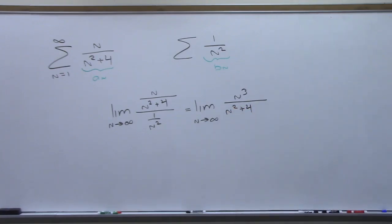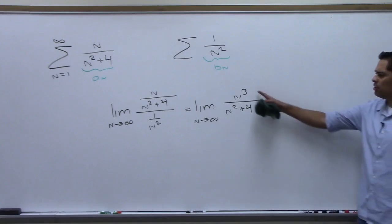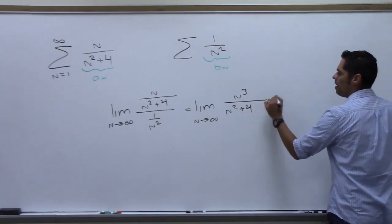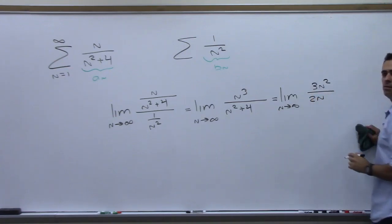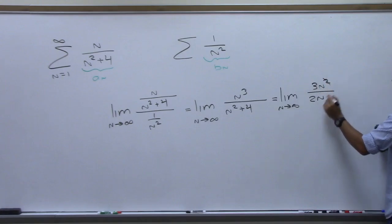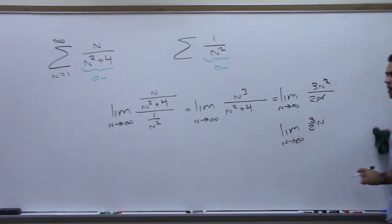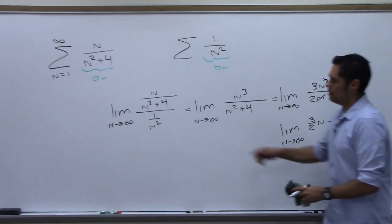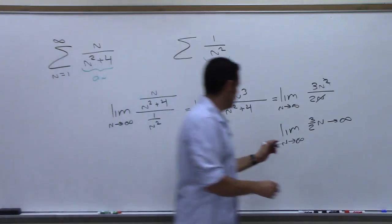This is n³ over n², so we get infinity over infinity. Applying L'Hôpital once gives 3n² over 2n. Simplify — one of the n's cancels — leaving the limit as n goes to infinity of (3/2)n, which goes to infinity. That means the test failed. The limit comparison test failed for this particular choice.